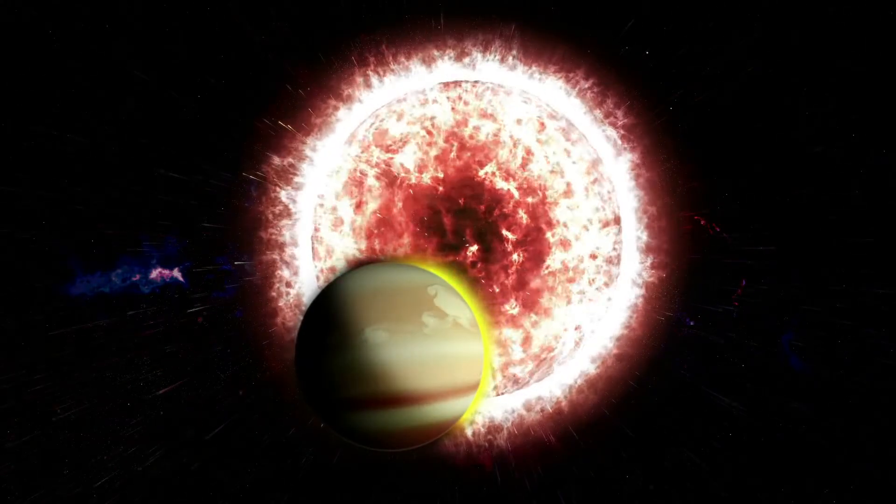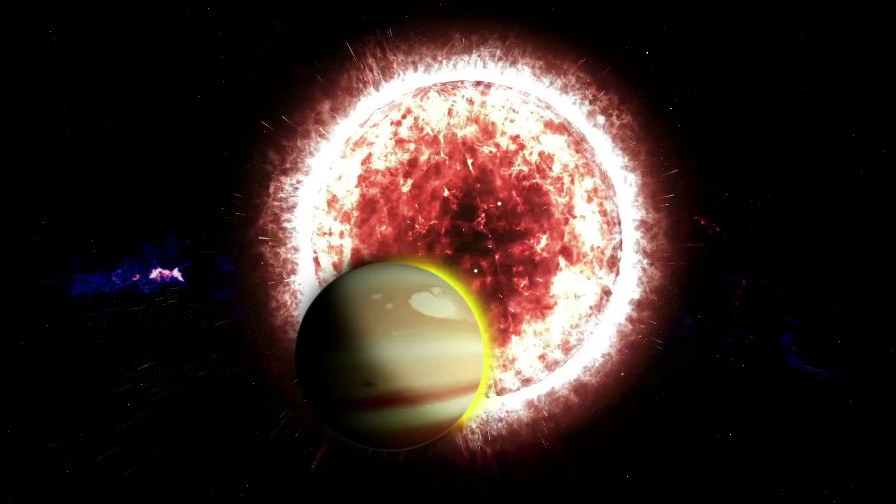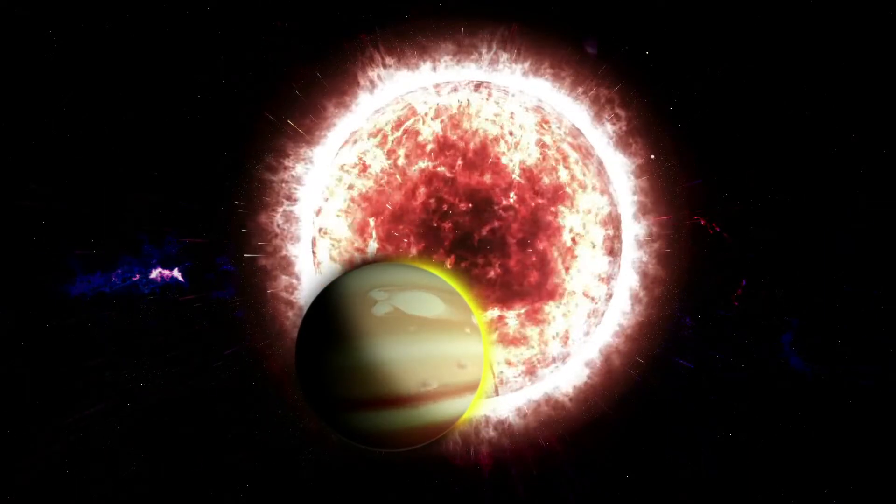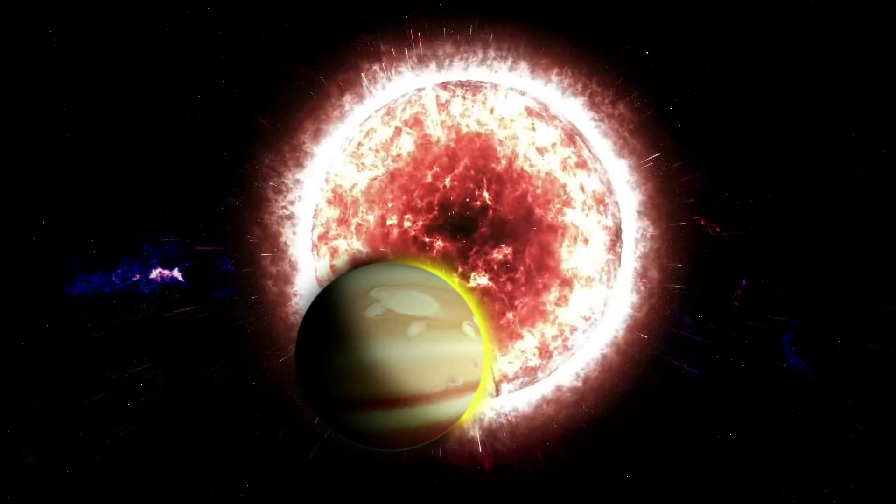NGTS-4b, nicknamed the Forbidden Planet, was found by a team led by the University of Warwick. This planet orbits a star in 1.3 days in the Neptunian desert zone, which is the region close to stars in which no Neptune-sized exoplanets are found.